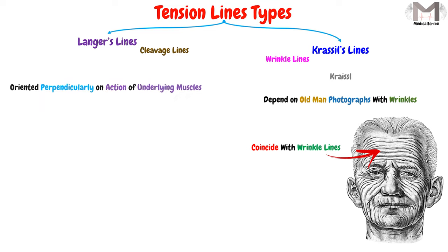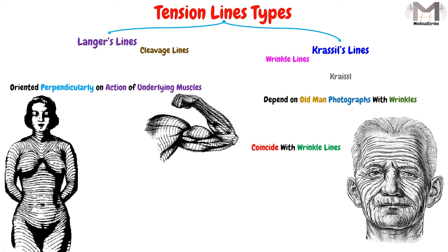And these lines will be oriented perpendicularly to the action of the underlying muscles. What I mean is that, when a muscle contracts, it will have a direction and it will make a specific action. So, these lines will run perpendicularly to the action of this muscle. And because of that, they are considered as the lines of the maximum skin tension.